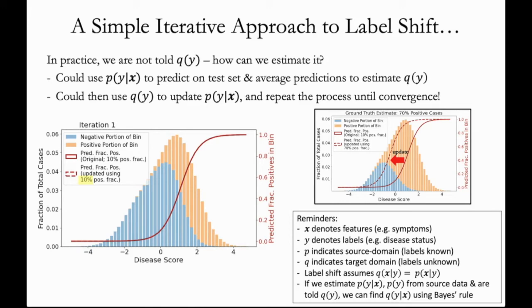Let's see how this iterative approach proceeds. So in the first iteration, we just use the original predictor to estimate the fraction of positives in each bin. This is the same as updating the predictor with the fraction of positives set to the original value of 10%. That is, the dashed curve will just lie on top of the solid curve. As mentioned, this predictor greatly underestimates the fraction of positives, so it predicts a much higher proportion of blue in each bin relative to the ground truth.